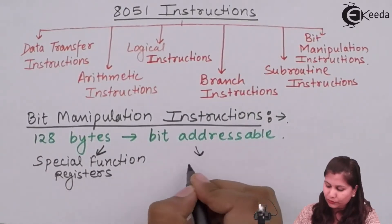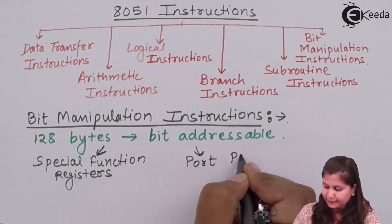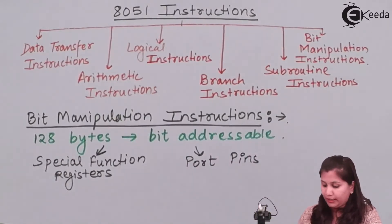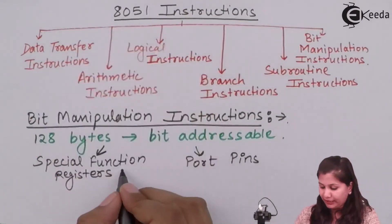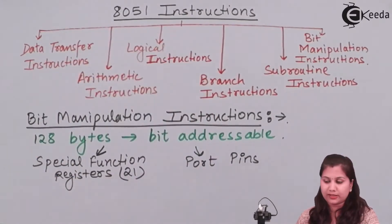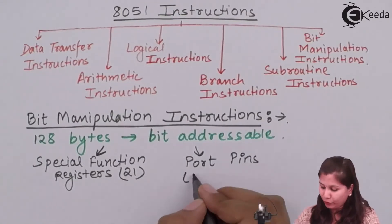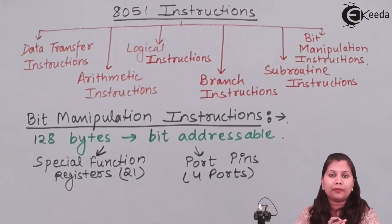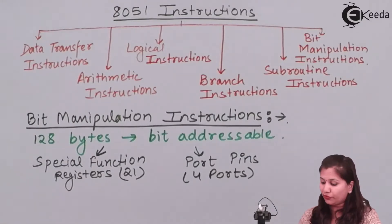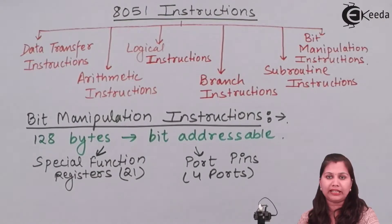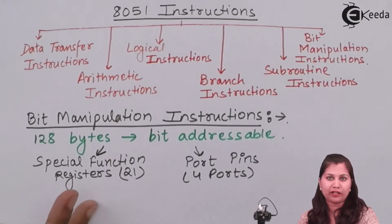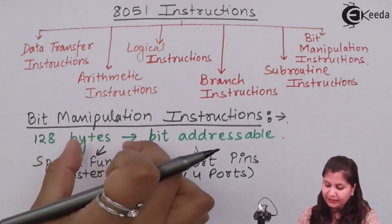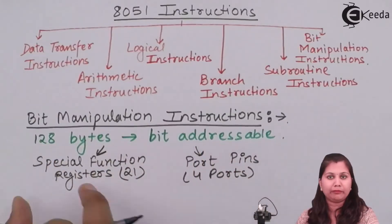In this bit-addressable 128 bytes we have some special function registers of the 8051 and also some port pins. In 8051 we have 21 special function registers. We also have four ports — port 0 to port 3 — each port being 8 bits wide, giving us a total of 32 bits. This is how the 128 bytes of bit-addressable memory is divided.